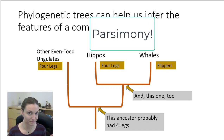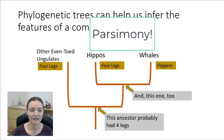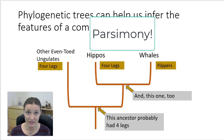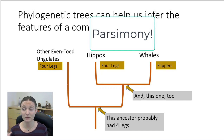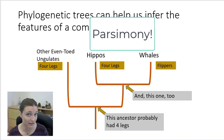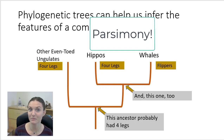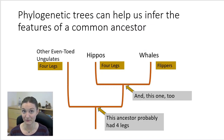Remember the idea of parsimony? So there was probably one point in time a form of a whale that still had four legs, and fossil evidence has confirmed this idea that we first hypothesized through genetic analysis.